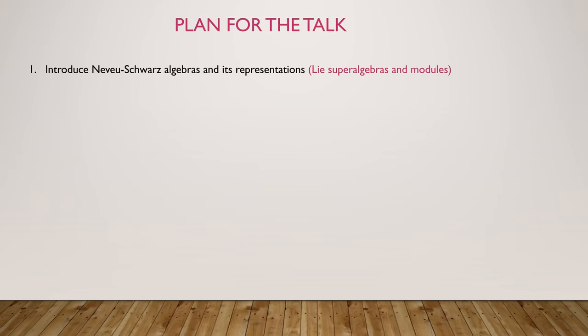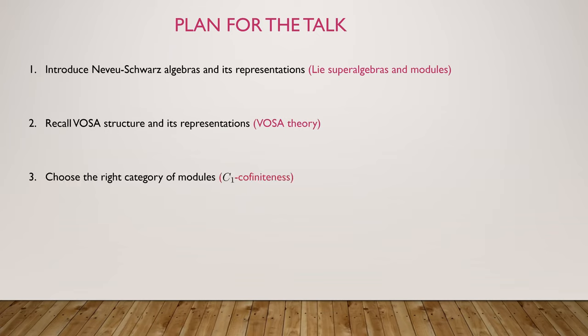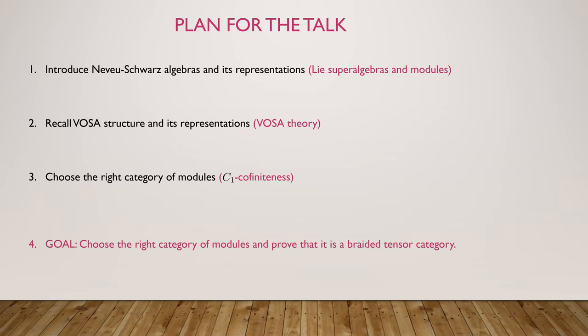The plan for the talk is to introduce the N equals 1 algebra, recall what a vertex operator superalgebra is, fix some notation, choose the right category of modules — we will see that C1 cofiniteness, which is a technical condition, will be the key to choosing the right module category — and the goal is to prove that enough conditions from the Huang-Lepowsky-Zhang theory are satisfied, that we can guarantee there's a graded tensor structure.